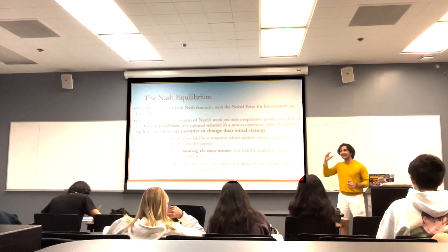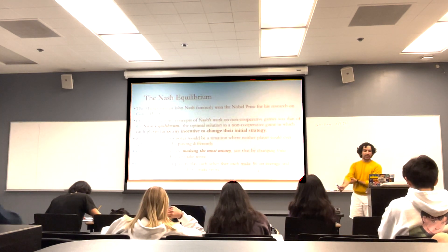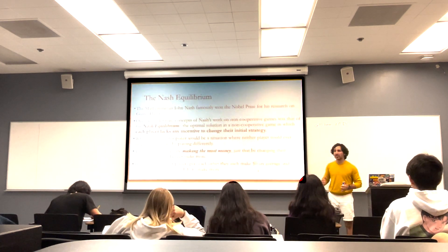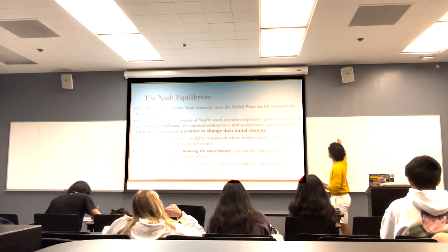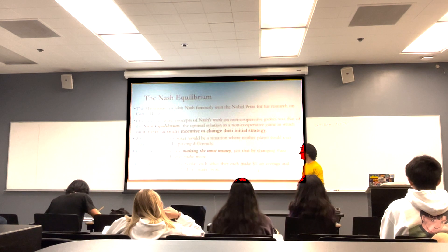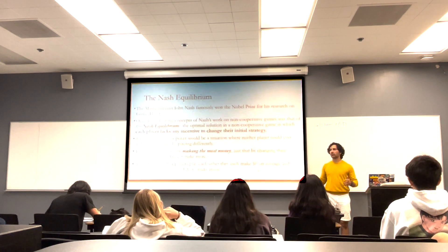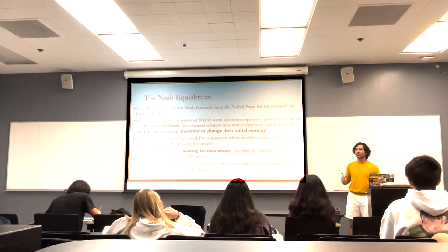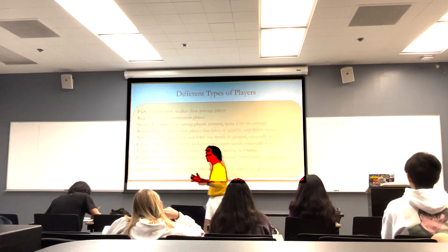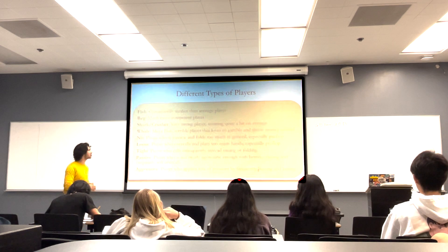Nash equilibrium is the GTO strategy. It's where each player lacks an incentive to change their strategy — there's no incentive to change because you're in the ideal situation if you're playing against a GTO opponent. That is equilibrium: when both players are making zero EV because both are perfect. That's what would happen at the Nash equilibrium state, which of course never happens in practice. So we're trying to get as close as we can, with deviations that are even more profitable.